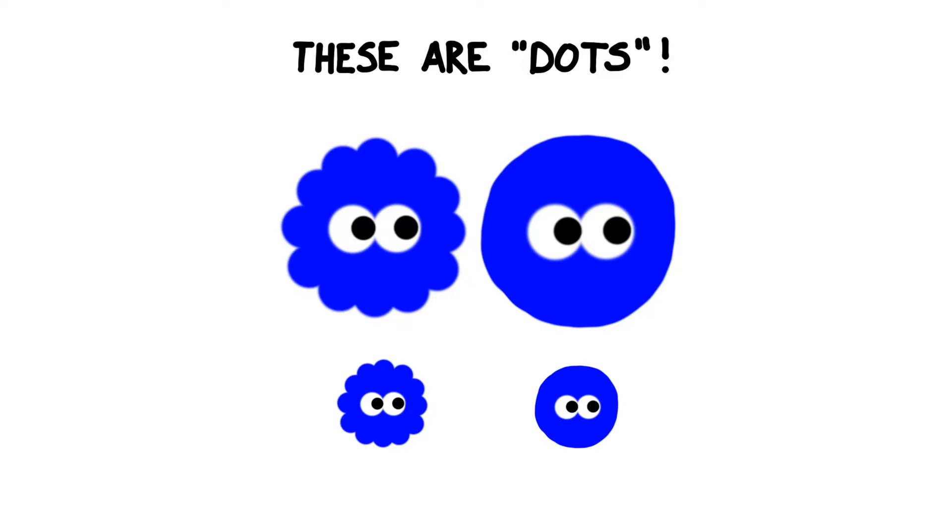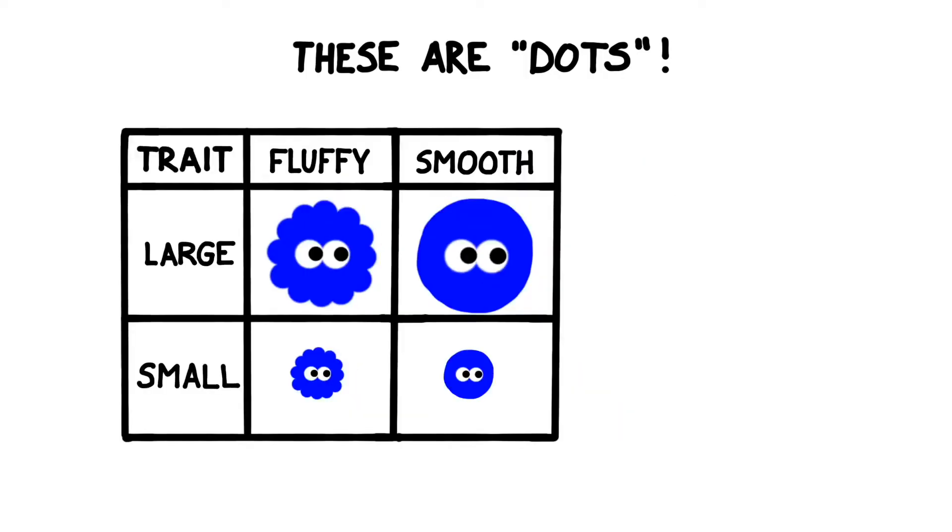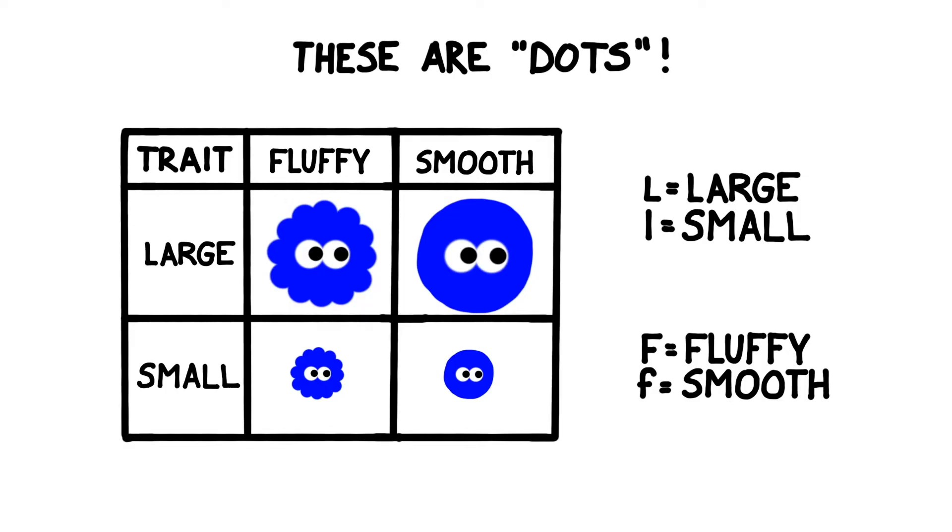To keep things simple, let's begin by breeding some fake organisms that I call dots. Unlike most creatures in the real world, dots are the ideal species for us to study because their traits always follow the rules of Mendelian genetics perfectly. Among other characteristics, dots can be either large or small in size and have either a fluffy or a smooth coat. Large and fluffy are the two dominant traits.